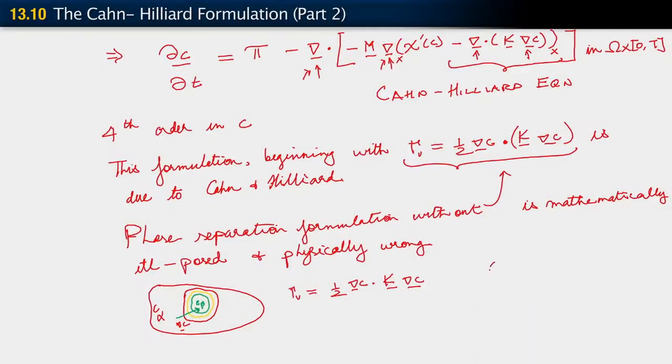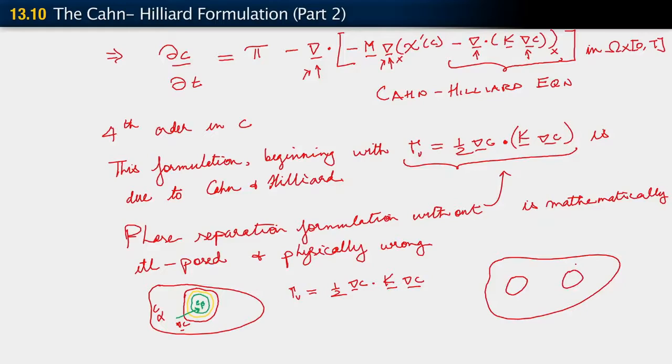By making us pay a price for this, it actually makes the total energy of different arrangements of particles different. So the free energy, or the total free energy of something like this, is not the same as the total free energy of a situation where we have maybe the same total volume of beta but separated into two particles. The total volume of the beta particles is the same.